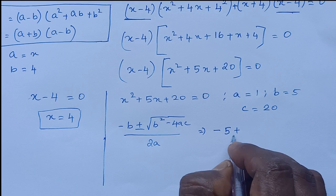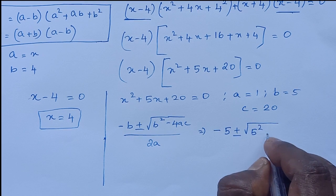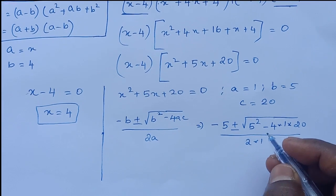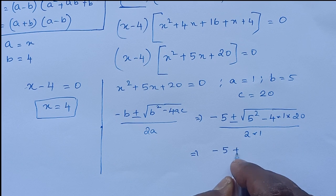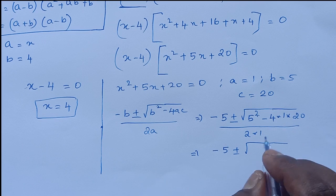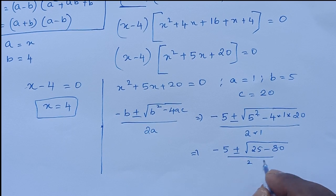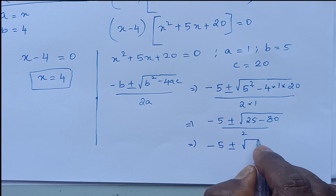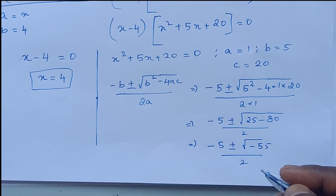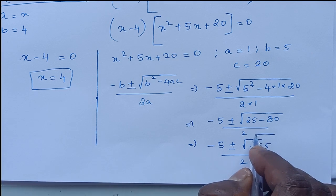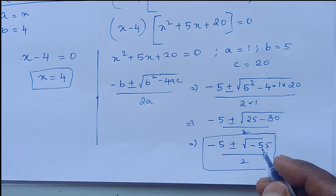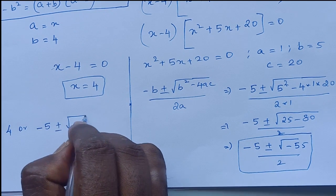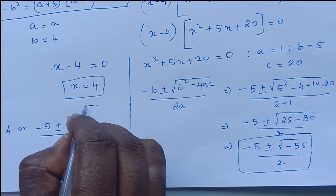Using the quadratic formula: x equals minus 5 plus or minus square root of 5 square minus 4 into 1 into 20, all over 2 into 1. So minus 5 plus or minus, 5 square is 25, minus 4 into 20 is 80. So 25 minus 80 by 2. This gives minus 5 plus or minus square root of minus 55 upon 2. So this gives another two roots. So the value for x is 4 or minus 5 plus or minus square root of minus 55 upon 2. So this is the value of x.